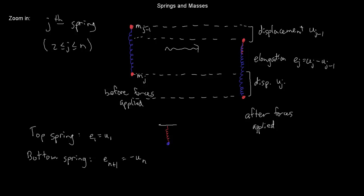Let's draw the top picture. I have my wall, my spring, and a mass at the bottom of it. I nudge the mass downward a little bit — so the displacement is exactly the same as the elongation; that's how much the spring has stretched. As soon as I know all of my displacements U1 through Un, that's exactly what it means to know the new configuration. I'll know exactly where the masses will end up after I've applied my forces. So I just need to find my U's.